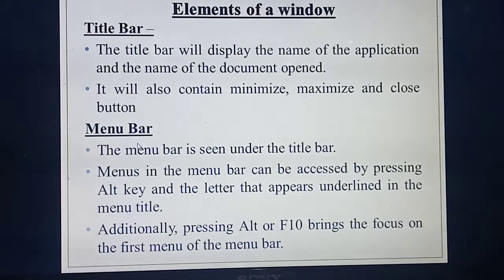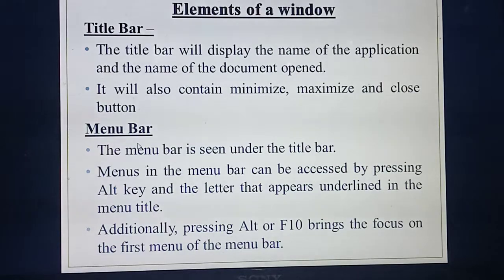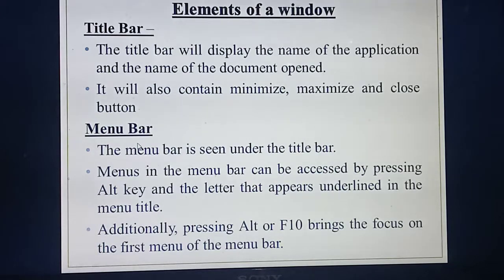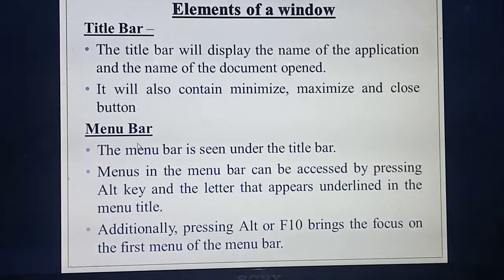Next one is the menu bar. Under the title bar, next to the title bar, there is the menu bar. There are lots of menus in the menu bar. How do you access the menus? By pressing the Alt key on your keyboard and the underlined letter. For example, to open File menu press Alt+F; for Edit menu press Alt+E. Otherwise you can press F10, and the first menu present in the menu bar will open.